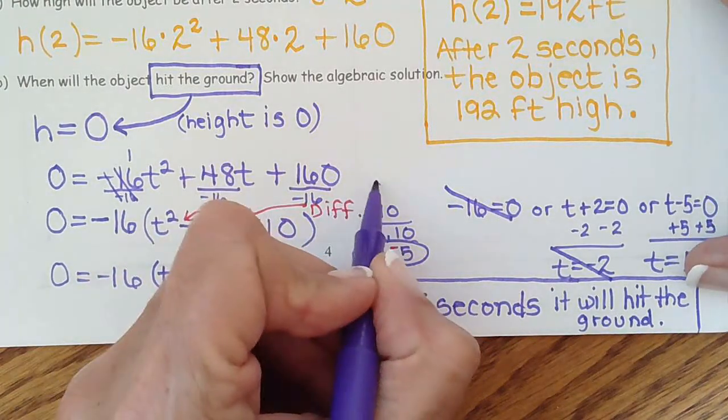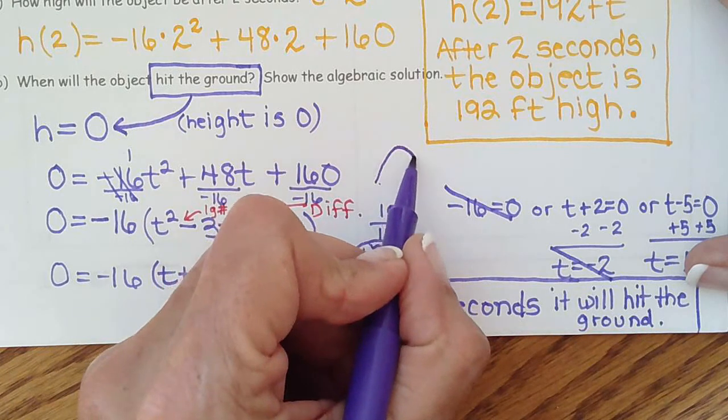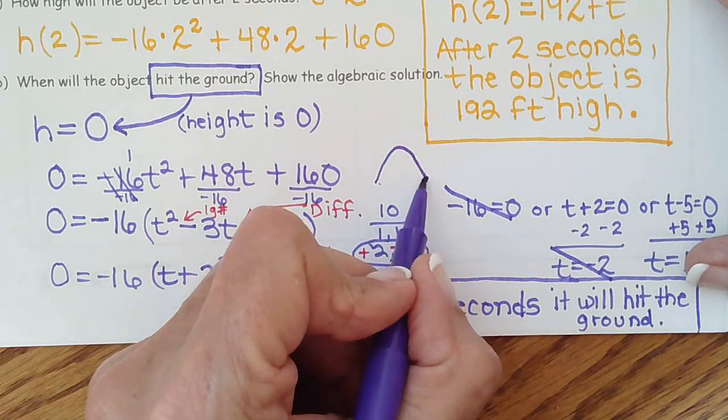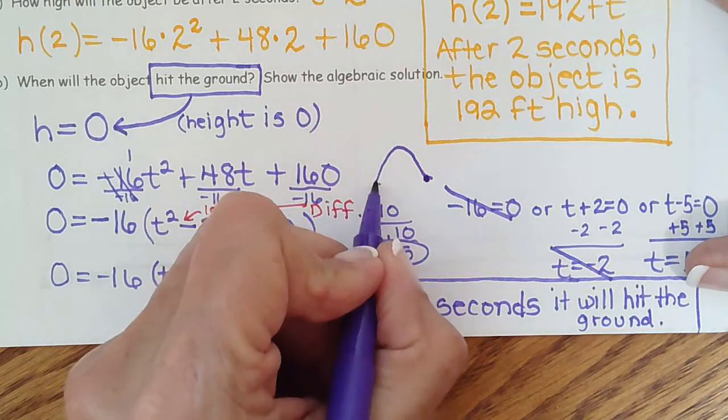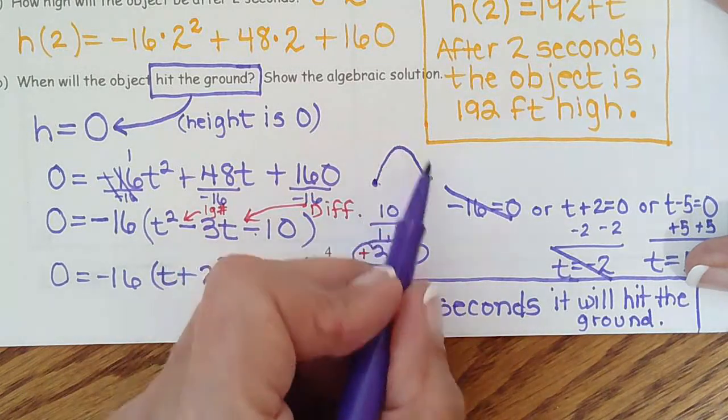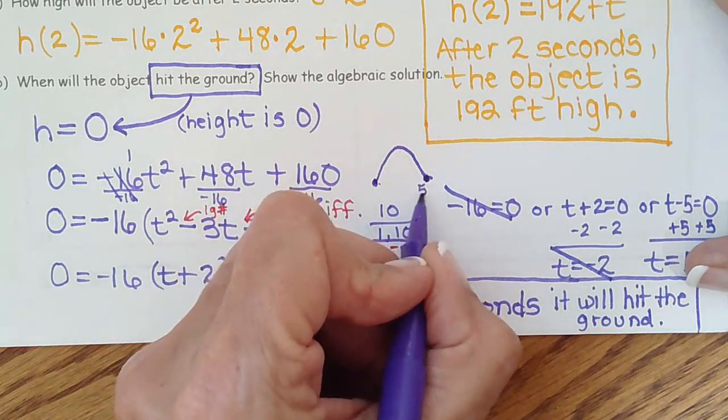So that means it's going to go up. And then after 5 seconds, it's going to be back down on the ground. So at 0 seconds, it will be on the ground. And at 5 seconds, it will be on the ground.